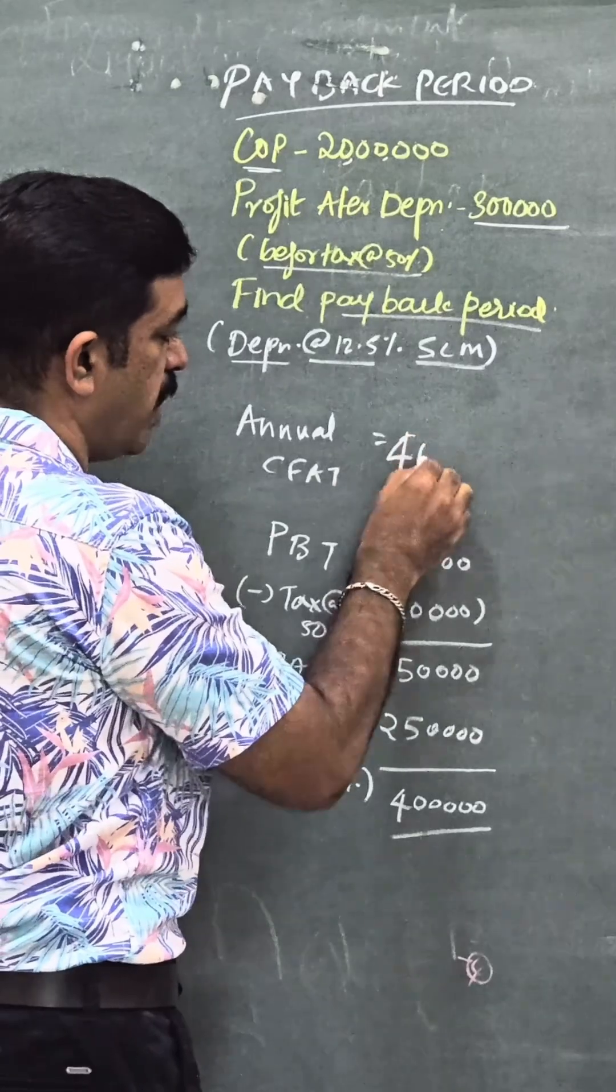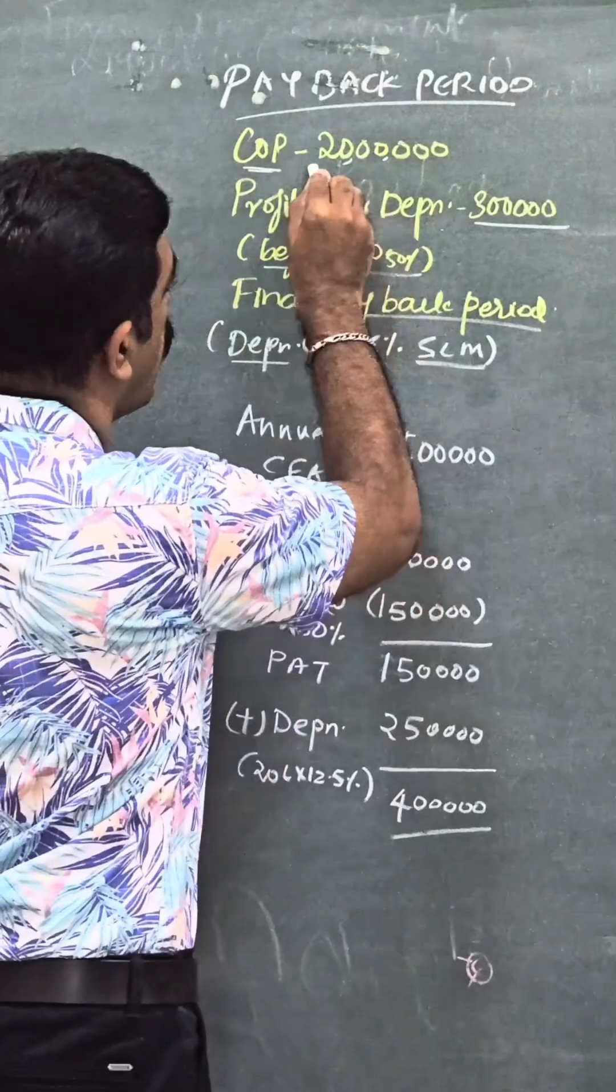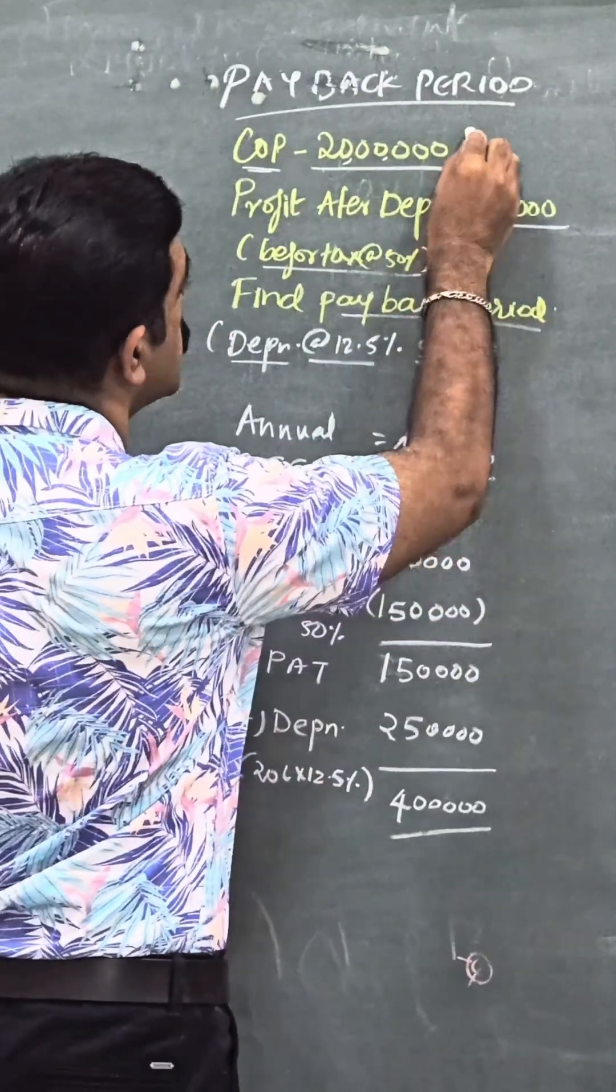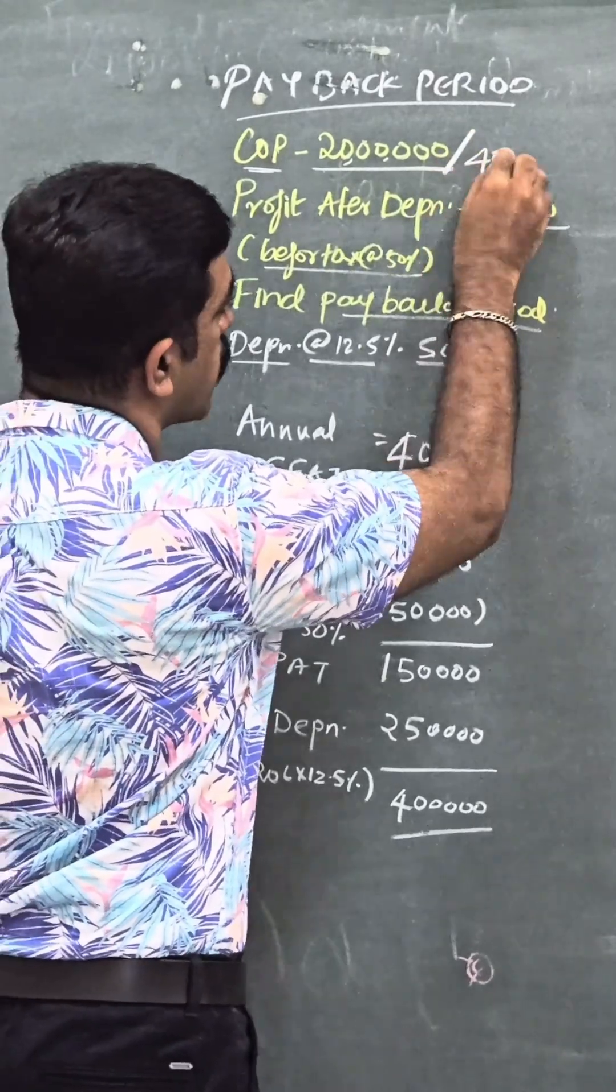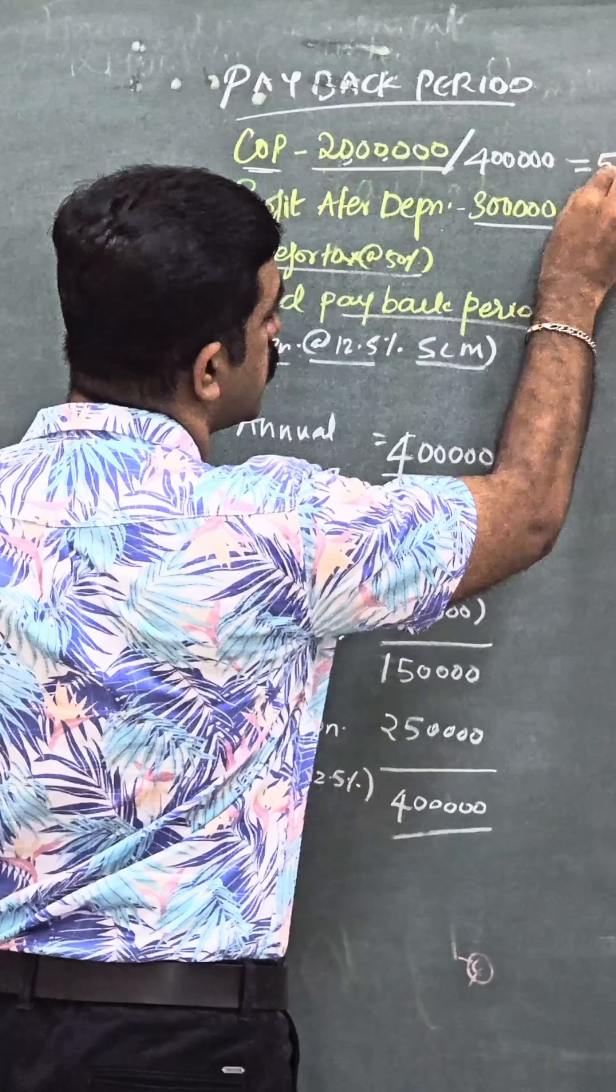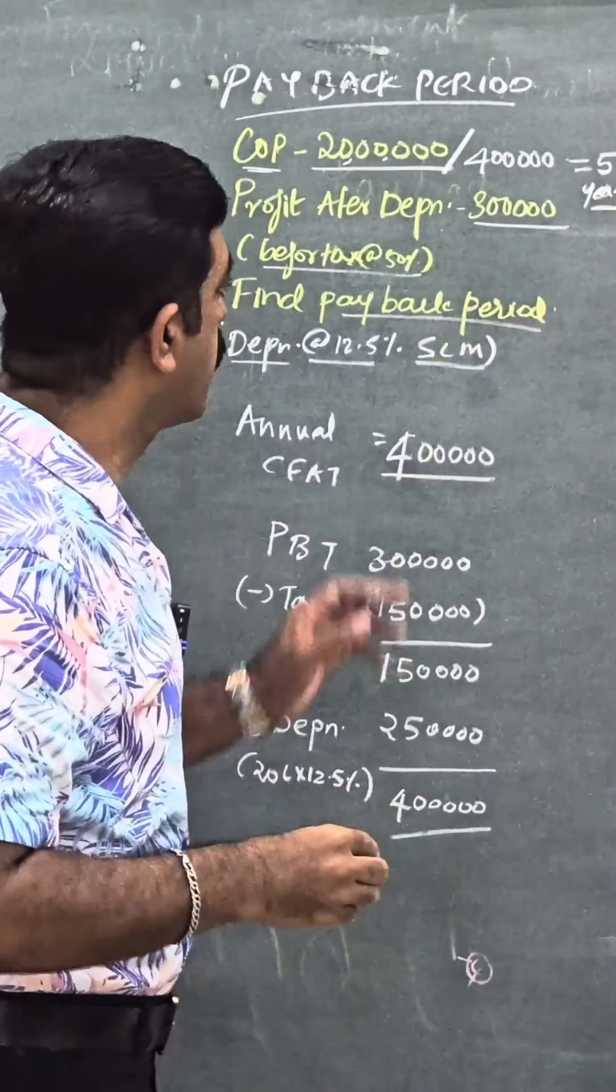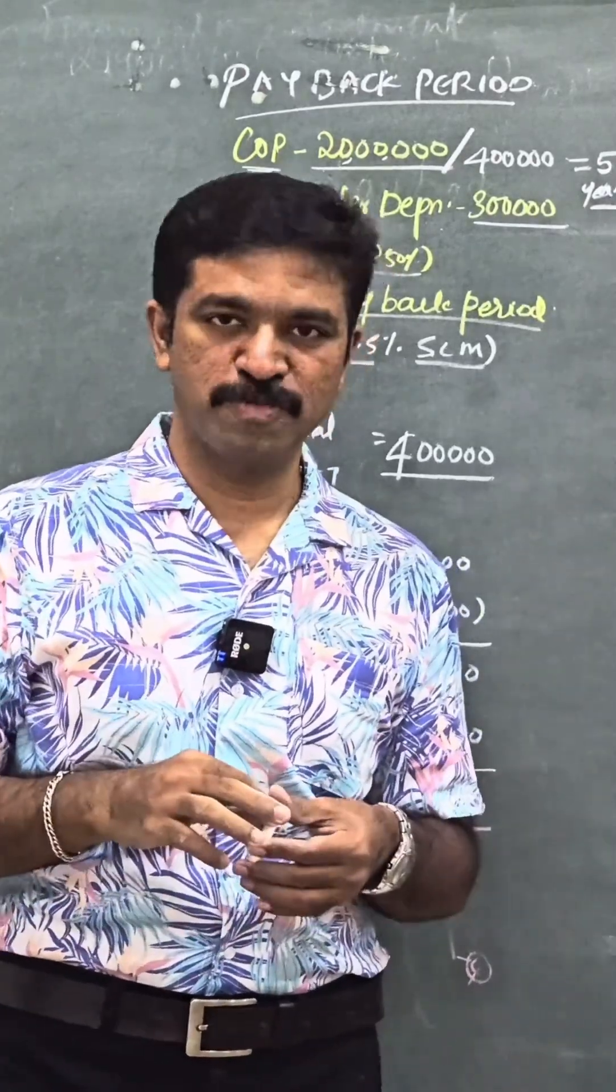Payback period is basically cost of project divided by annual cash flow after tax. So it is this 20 lakh divided by 4 lakhs. What you get is 5. So this 5 years is the payback period. It is every year the project is generating 4 lakhs, so in 5 years period it will generate 20 lakhs.